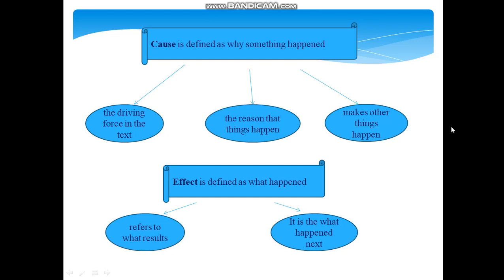But what exactly do we mean when we speak of cause and effect in relation to reading? Cause is the driving force in the text. It is the reason that things happen. In essence, cause is the thing that makes other things happen. Effect refers to What results. It is the What happened next in the text that results come from the preceding cause. To put it concisely, cause is the Why something happened and effect is the What happened.